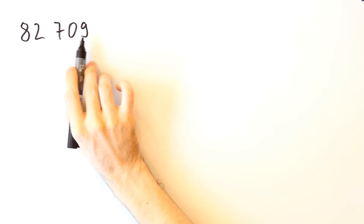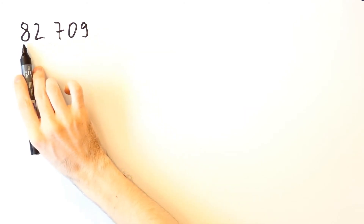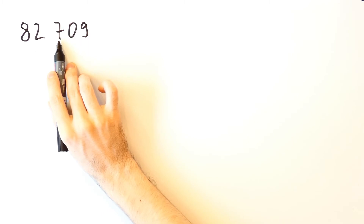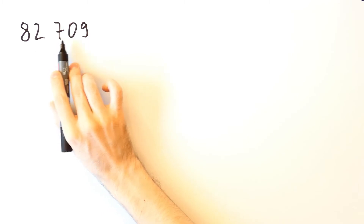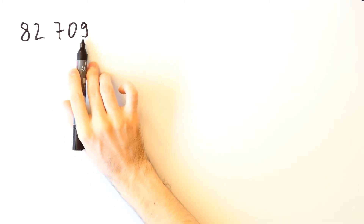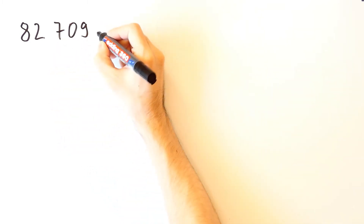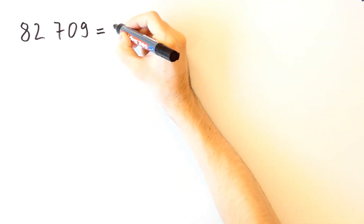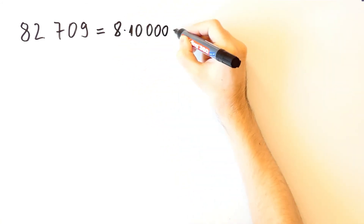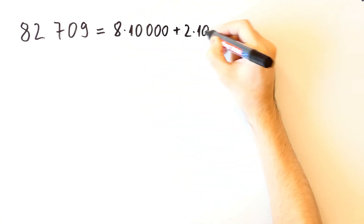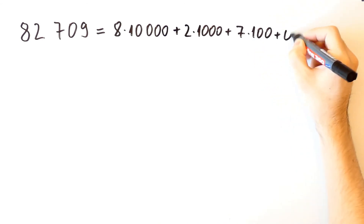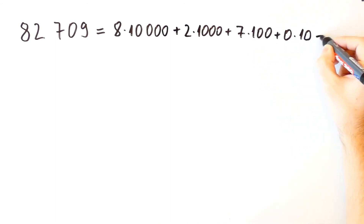82709 is equal to 8 times 10,000 plus 2 times 1,000 plus 7 times 100 plus 0 times 10 plus 9.